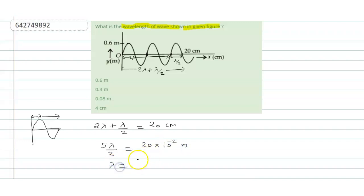So lambda becomes 40 divided by 5 divided by 100, which becomes 0.08 meter.